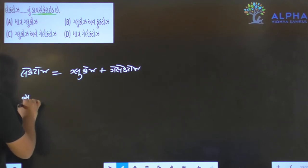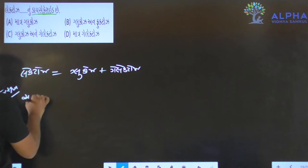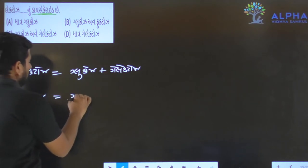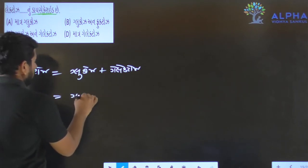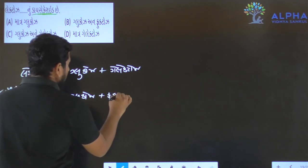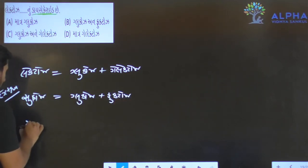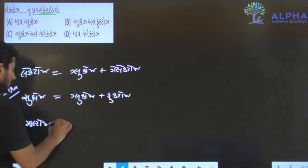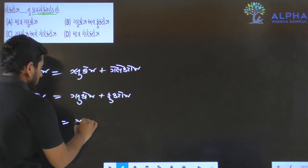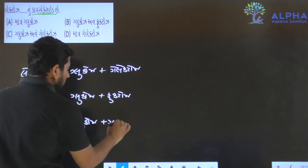You can see that sucrose is glucose and fructose. And maltose is glucose plus glucose.